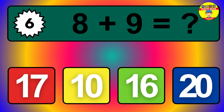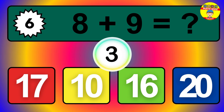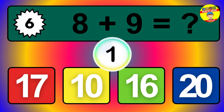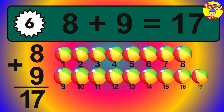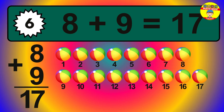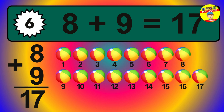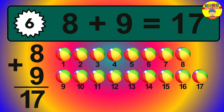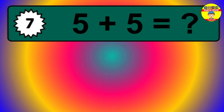Question 6. 8 plus 9 equals what? So the answer is 8 plus 9 is 17. Let's count it: 1, 2, 3, 4, 5, 6, 7, 8, 9, 10, 11, 12, 13, 14, 15, 16, 17.